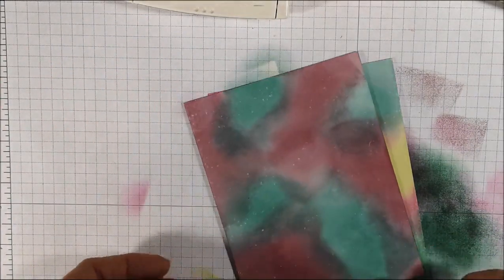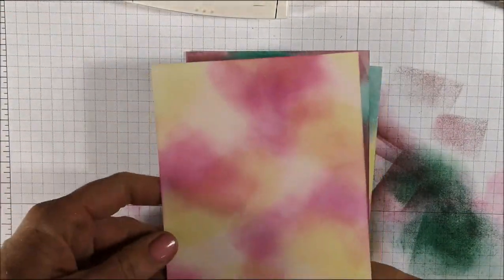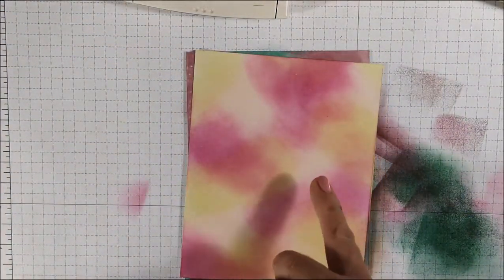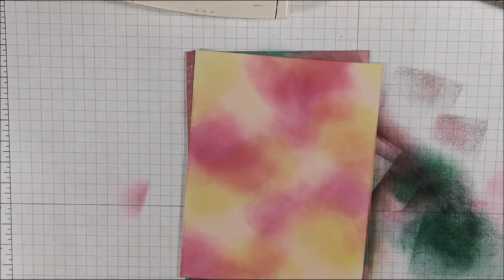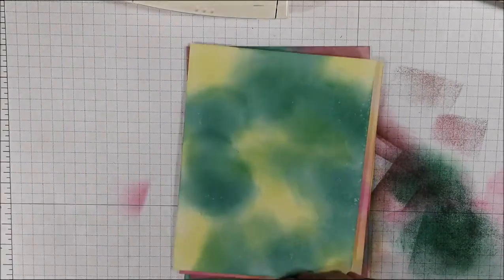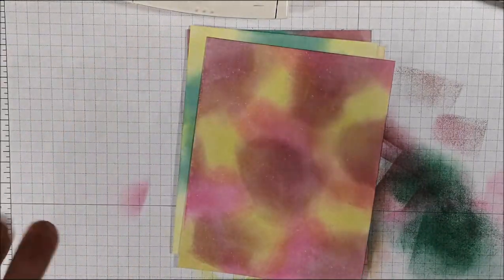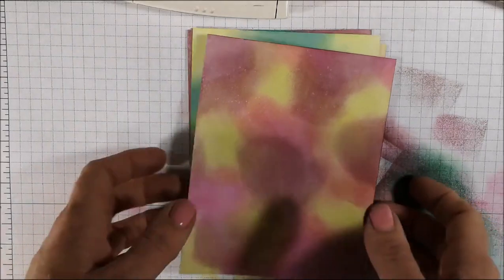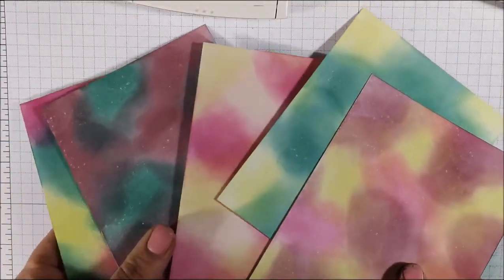This one was using the Fresh Fig and Tranquil Tide. This one's a little bit softer. The Berry Burst is a little more pronounced, but I use Berry Burst, the Powder Pink, and Lemon Lime Twist. This one's just Lemon Lime Twist and Tranquil Tide. And then this one is Lemon Lime Twist, Fresh Fig, and Berry Burst. So I've got all kinds of fun backgrounds.